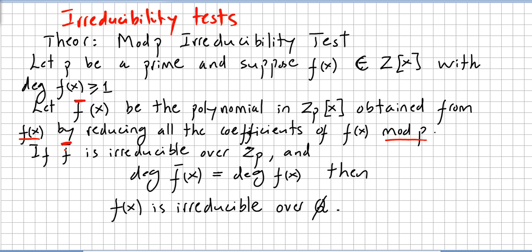If f̄ is irreducible over Z_p and the degree of f̄(x) equals the degree of f(x), then we can say f(x) is irreducible over the rationals. A bit confusing when you read it. The proof is very easy and very nice. I'm not going to do it and I'm going to jump directly into some examples.